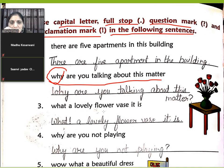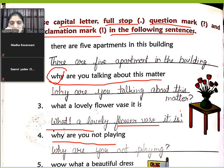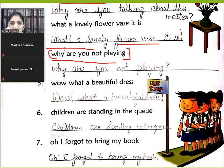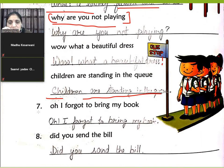'What a lovely flower it was!' — we put an exclamation mark here. 'Why are you not playing?' — this is a question so we put a question mark. 'What a beautiful dress!' — capital W, exclamation mark at the end. 'Children are standing in a queue' — capital C, full stop at the end because it is a simple sentence, not a question or exclamation.